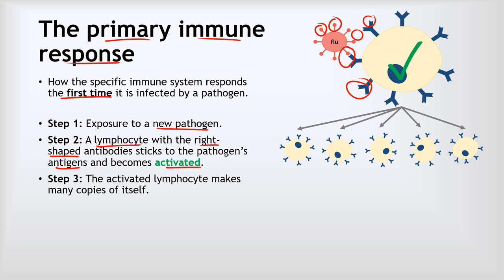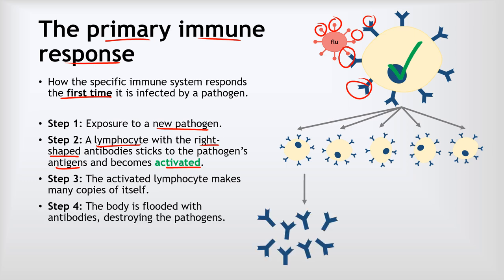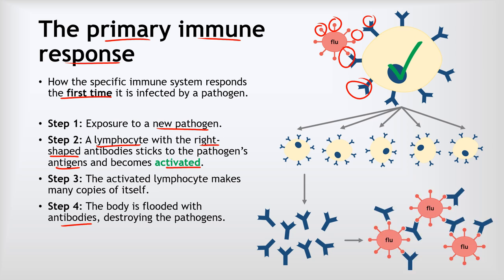At this point, all of those many copies of the lymphocyte will flood the body with antibodies, which can then destroy the pathogen. All of these antibodies stick to the flu pathogens, and that process helps to destroy them.